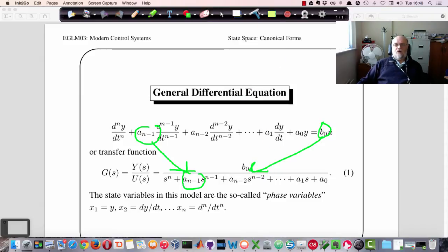If we define our phase variables to be the state variables to be what are called phase variables. So x_1 is y, x_2 is dy by dt, and so on. So x_n is d^n y by dt^n. Then we get the what's called a Companion Form representation of the model.